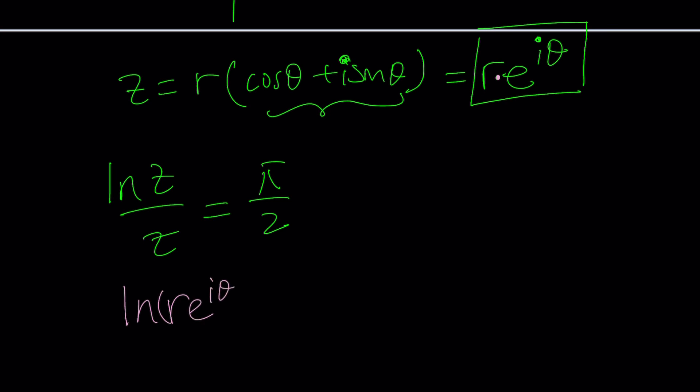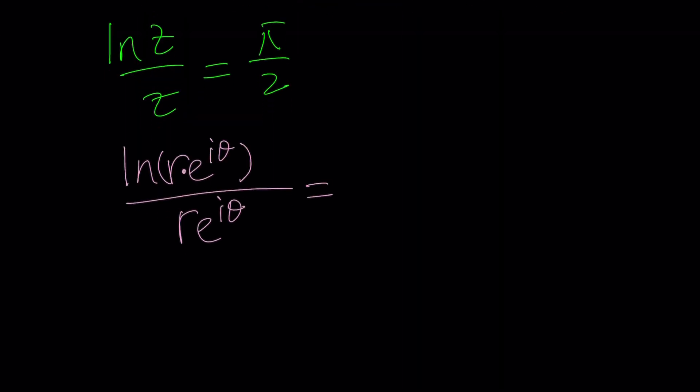First of all, you got to notice that this gives you something cool because, first of all, you have a product. So you can kind of split it up. That would give you ln R plus iθ. By the way, this could be the definition of the natural log of a complex number. In other words, the complex logarithm.